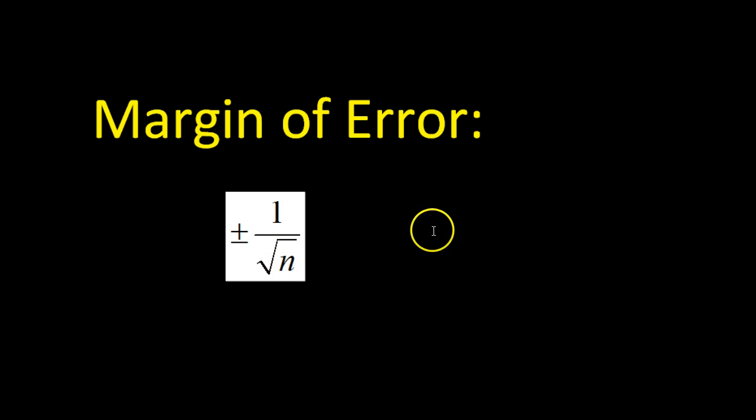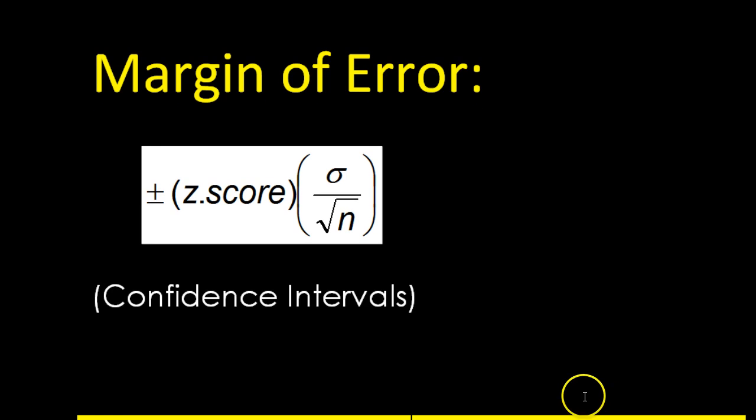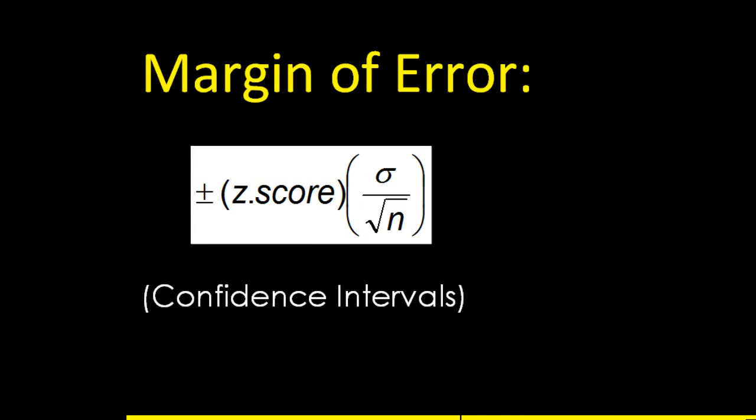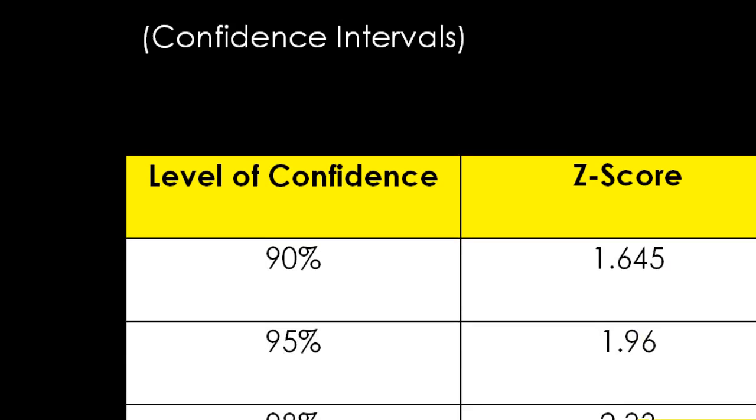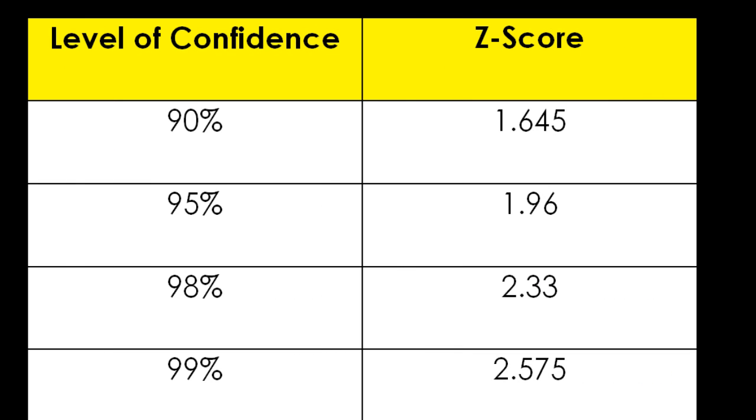That was a simpler time. But as we discuss confidence intervals, we will now be using this formula. For the z-score, we will be using the z-scores from this table. If I want to be 98% confident that the truth is within my interval, I'm going to use this z-score, for example.